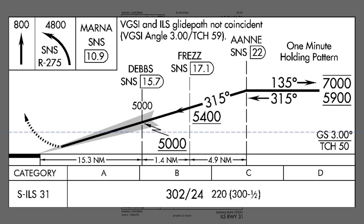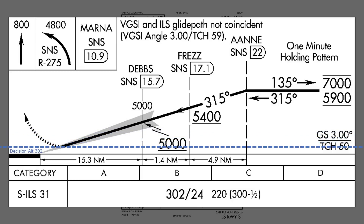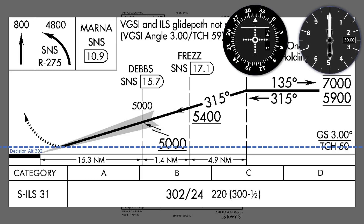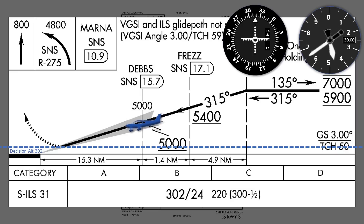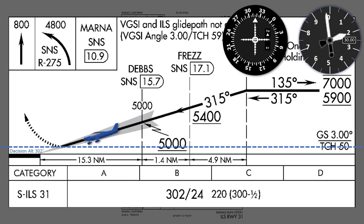We can drop an imaginary line on our profile view to represent the decision altitude of 302 feet. The glide slope intercept occurs at DEBS, which is where the lightning bolt symbol is. We'll intercept at 5,000, so we'll be at that altitude initially. The glide slope needle will be above center. As we fly in, it'll start to come down towards center, and we'll follow it down, keeping the needle centered until we reach the decision altitude of 302 feet.